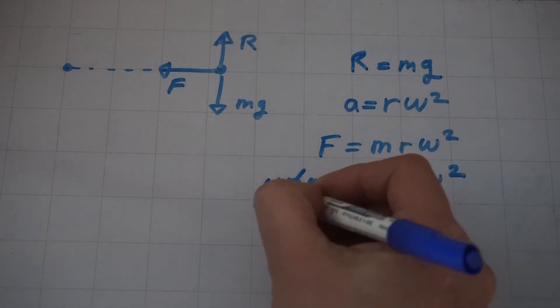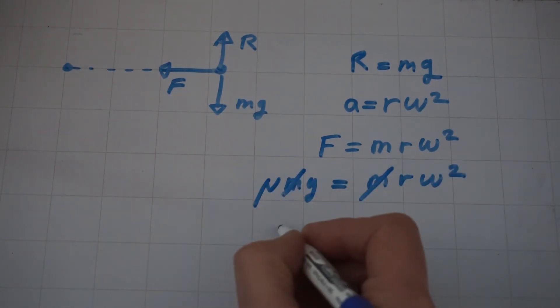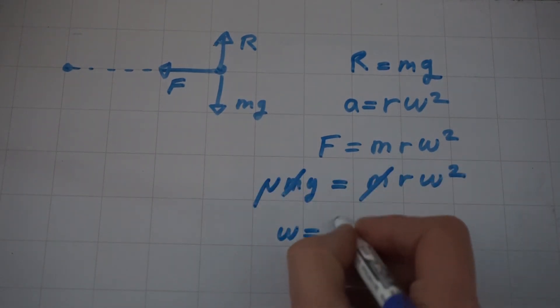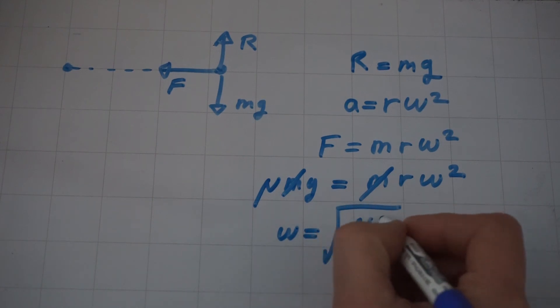We can cancel the m's and rearrange to give omega equal to the square root of mu g over R.